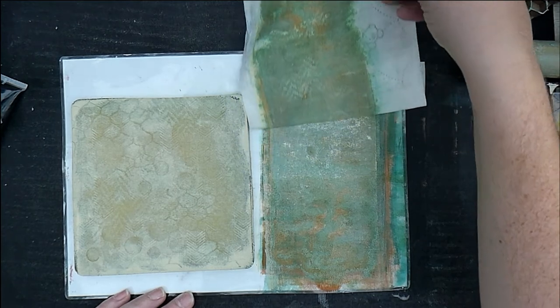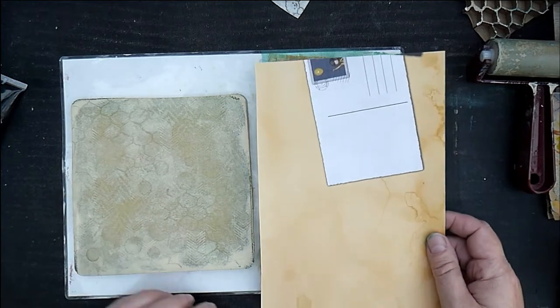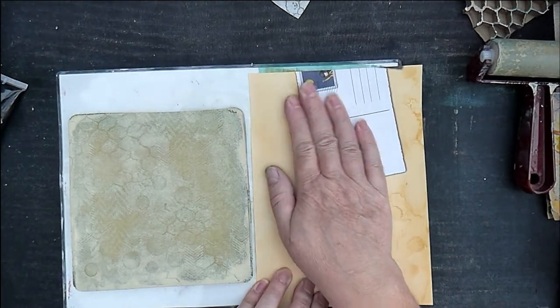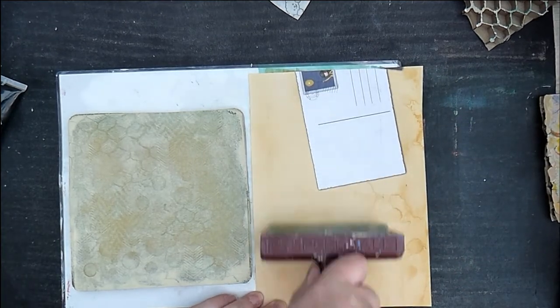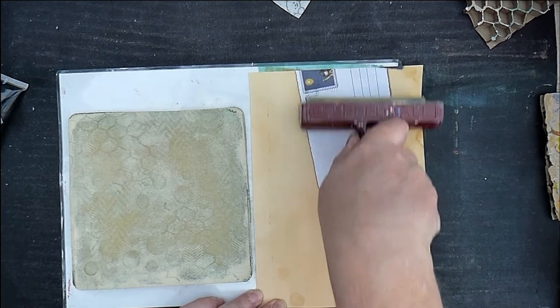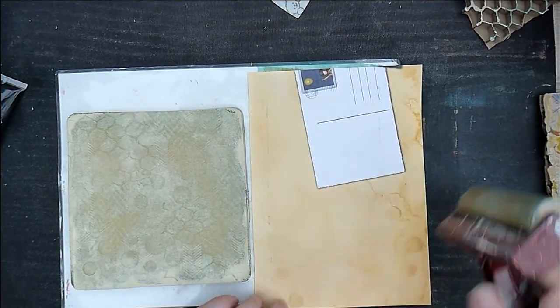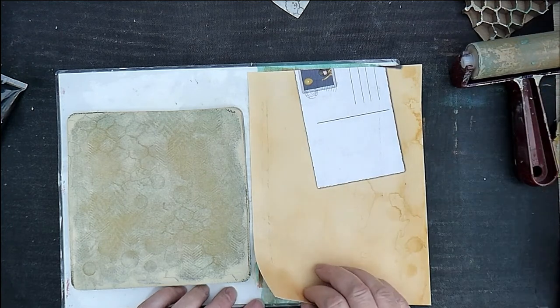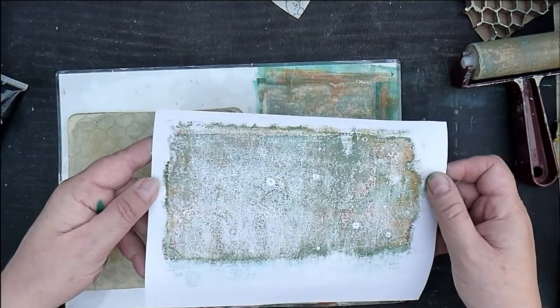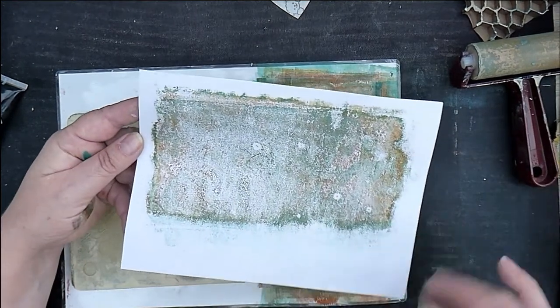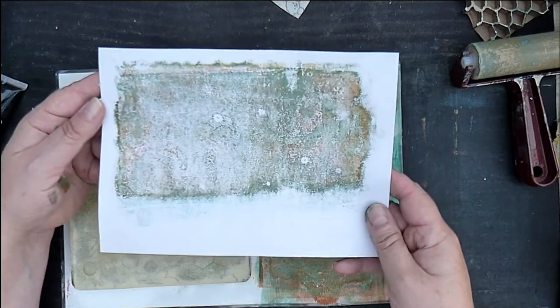So you pull the baby wipe off. And the baby wipes are really good to keep because you get a lovely pattern on there. And then roll again with your brayer. And then this is the hey presto moment whether you either get something or nothing. And that is the sort of thing I get. Sometimes I get a little bit more bigger texture, sometimes less.